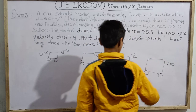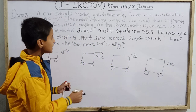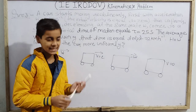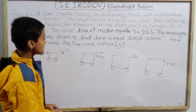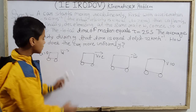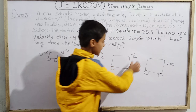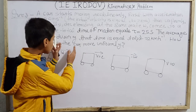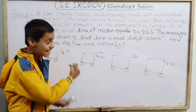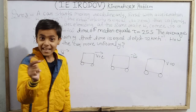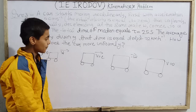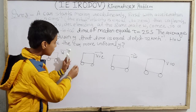The key concept here is that the rate of acceleration and rate of deceleration are equal in magnitude. This means the time spent accelerating equals the time spent decelerating, and the distance traveled during acceleration equals the distance during deceleration. Applying this concept is the key to solving the question easily.